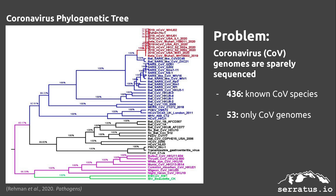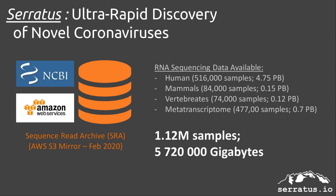The problem is that we don't have good coronavirus sequencing data for all of these species. Only 12% of coronaviruses have complete genomes, and it's likely that many more thousands of viruses are completely unknown. To discover new coronavirus sequences, we are re-analyzing all public RNA sequencing data — an unprecedented analysis of over 1 million samples, or 5.7 million gigabytes of data.